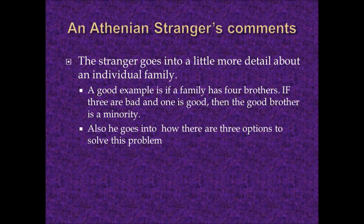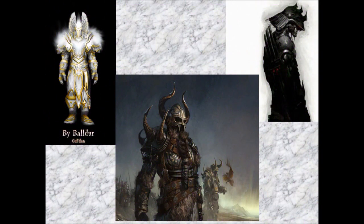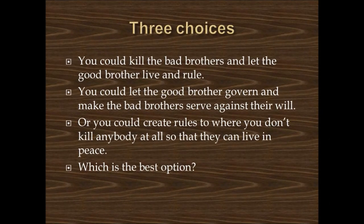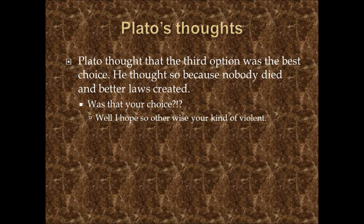There are three options that Plato suggests to solve this problem. The first choice is that you could kill the bad brothers and let the good brother live and rule. The second choice is that you could let the good brother govern and make the bad brothers serve against their will. The third option is that you could create a set of rules or laws so that you don't have to kill anybody at all, and everyone can live in peace. Plato thought the third option was the best choice, because nobody died and nobody was enslaved.